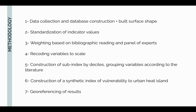We launched a small survey to our professors at the university and asked them which indicators should have more weight compared to others. We analyzed the results of the survey and computed averages for each value. Then we recoded the variables into scales from 1 to 10, constructed the sub-indexes by deciles grouping variables according to the literature, which is why we had four different sub-indexes. Then we constructed a synthetic index of vulnerability to urban heat island, and the final step was georeferencing the results.